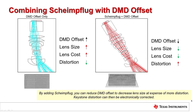Using the Scheimflug principle can also be combined with DMD offset. As shown on the left-hand side, using DMD offset only to achieve image offset results in an increase in lens size and lens cost, but with excellent rectilinear distortion. Adding partial Scheimflug to this can reduce the lens size and cost without creating a largely distorted image, as would occur when using Scheimflug only. A trade-off can be made to determine how much distortion is acceptable by combining partial DMD offset and partial Scheimflug and its impact on lens size, which impacts cost.